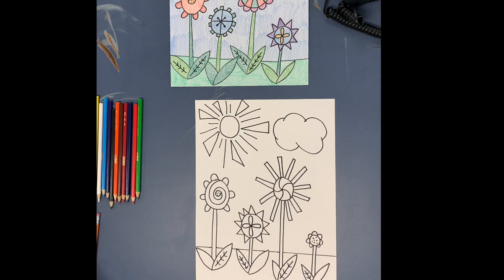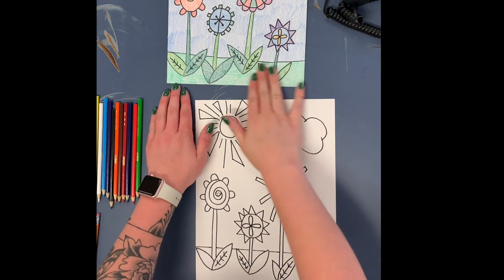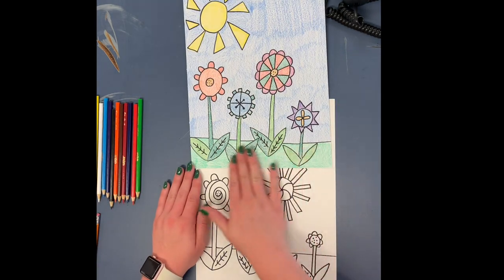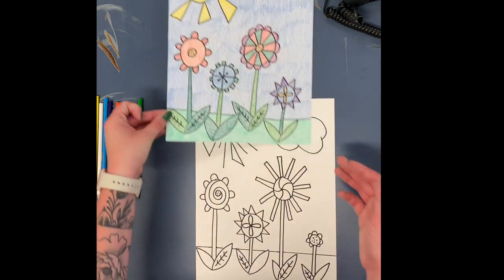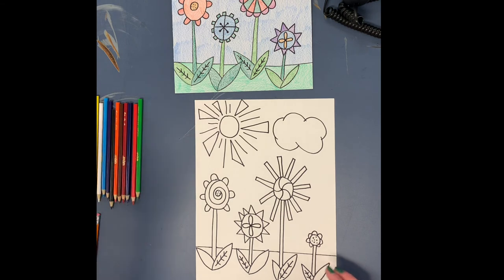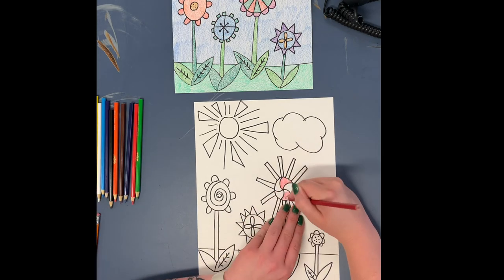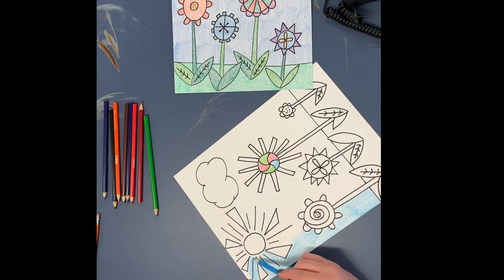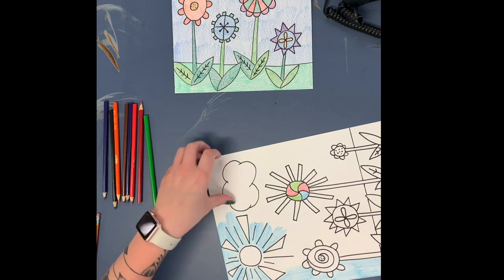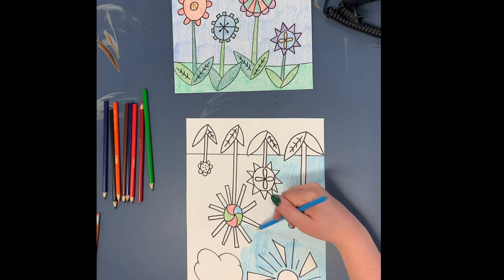So now you want to color it. Make sure you fill in all your white space. See, I have no white space on this. I took my time. I filled in all the colors. So make sure you are taking your time and filling in all the colors. I'm going to speed this part of the video up so that you don't have to watch me coloring.